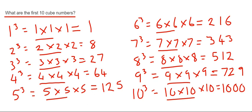There you go, guys. Our first 10 cubed numbers are 1, 8, 27, 64, 125, 216, 343, 512, 729, and 1000.